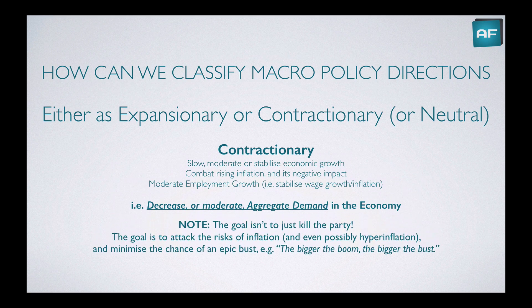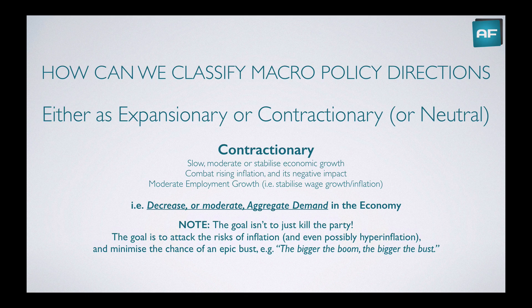But this is an important note: the goal isn't just to kill the party. Macro policy isn't trying to make less people employed or slow the good times. The goal is to attack the risks of inflation — and possibly even hyperinflation — and minimize the chance of an epic bust. The bigger the boom, the bigger the bust. If things get out of control and we have a huge boom, then we might have an even bigger bust. Inflation can destroy wealth and misallocate resources. We've seen countries with hyperinflation — historically in Germany, or in modern times in Venezuela — where economies really do fall apart.